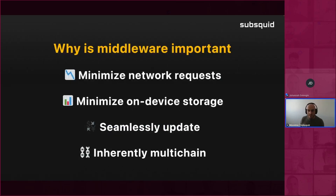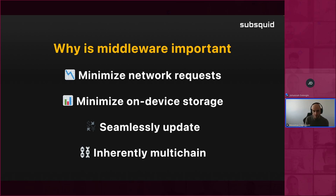Why is it important? It minimizes network requests — you don't have to keep going back and forth requesting all blocks; it's been done once for you and you can do a single request. It minimizes on-device storage for the same reason. And because of how Subsquid is built, it allows for seamless updates. It's also inherently multi-chain, since we offer data services called archives that are built to index one chain at a time with the same interfaces.